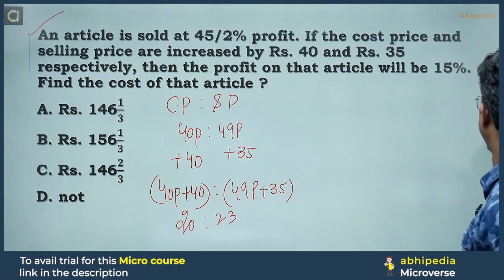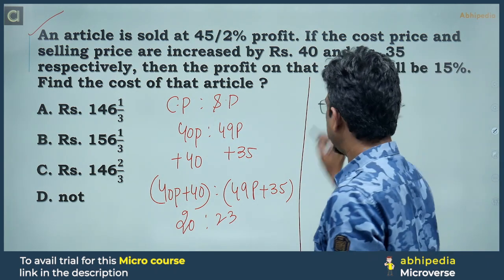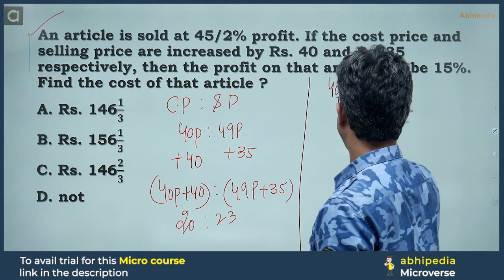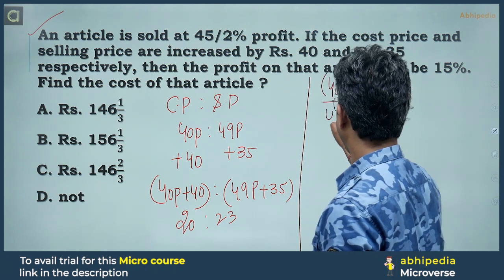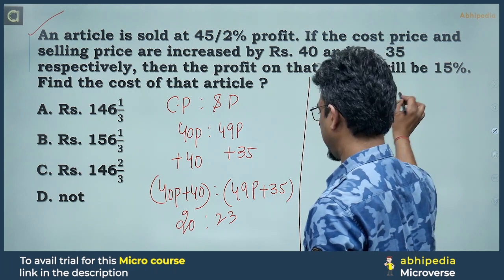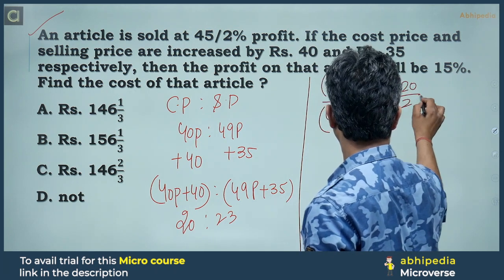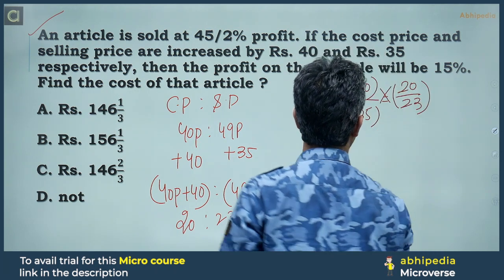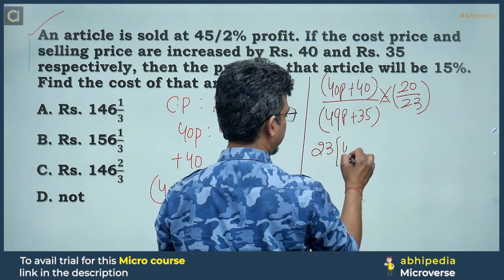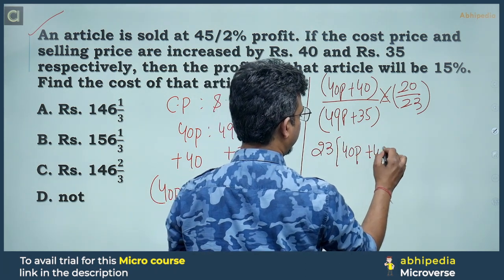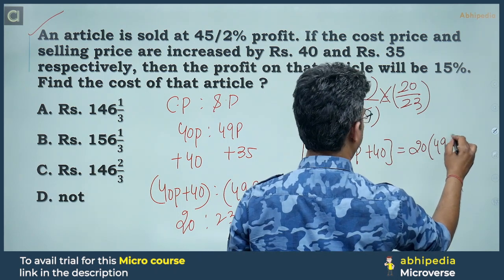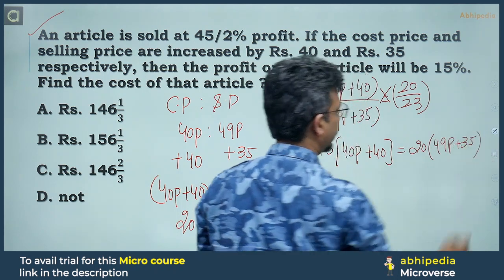Let me show the calculation clearly. On the left-hand side: (40p + 40) divided by (49p + 35) is equal to 20/23. So 23 times (40p + 40) is equal to 20 times (49p + 35).